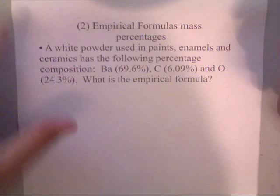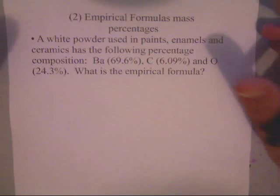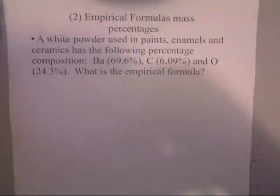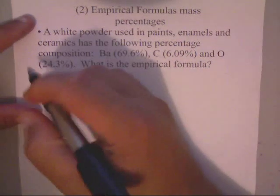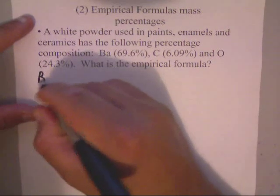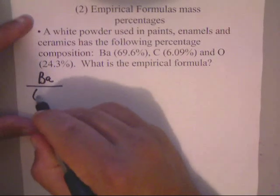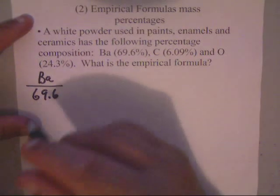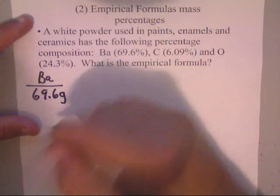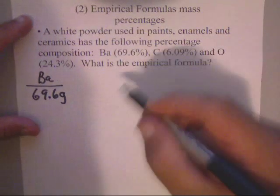Now, I love these because these are actually easier than the last one that we did, but they're also kind of similar. What I would recommend you to do is just keep them in columns, it makes it easier. You've got Ba, and they tell us in Ba that you've got 69.6%, but instead of that percent, we're going to pretend that these percents drop off and they turn into grams.